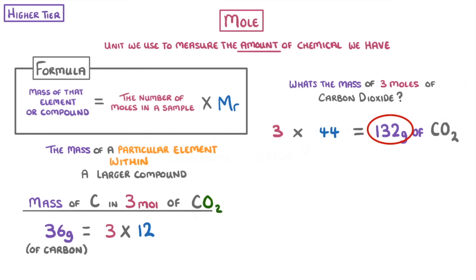And if you wanted to go one step further, you could subtract that 36 grams from the original 132 grams to find that there must be 96 grams of oxygen, because we can see that CO2 is only made up of carbon and oxygen.